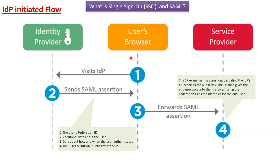Here we will see the IDP initiated flow. In this, there are three entities: identity provider, user's browser, and service provider. In step one, the user's browser sends credentials to the identity provider. The identity provider validates the credentials, and if valid, generates a SAML assertion and sends it to the user's browser. The SAML assertion contains the user's federation ID, which is the user's email ID, additional data about the user, data about how and when the user was authenticated, and also the X.509 certificate public key of the IDP.